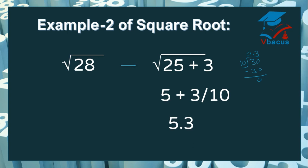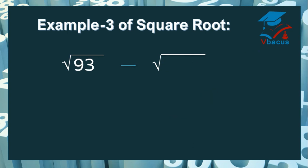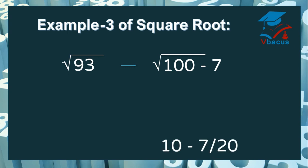Let us take a third example — let us find out the square root of 93. 93 is very close to 100. If we subtract 93 from 100, the answer is 7. So 100 minus 7 is 93.